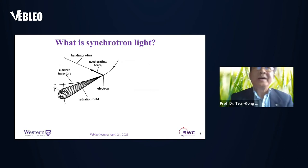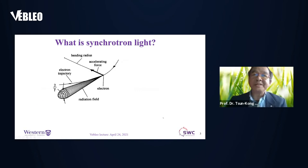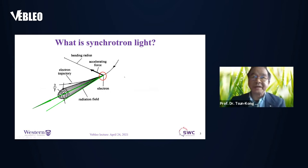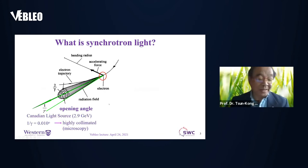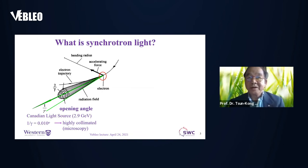So what is synchrotron radiation? When electrons are circulating in an orbit at high speed, they emit light in the forward direction in a very narrow cone — a highly collimated light emission tangent to the orbit. This collimation is defined by what is known as an opening angle, which is determined by the energy of the electron. At the Canadian Light Source, which is a 2.9 GeV synchrotron, the opening angle is only on the order of 0.01 degrees — very, very small. All the light comes out in a very narrow cone.